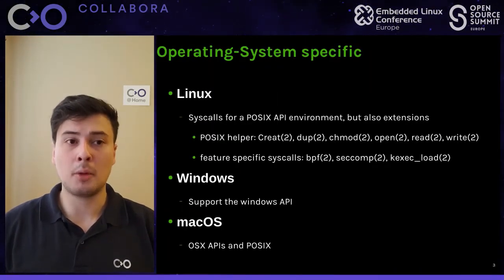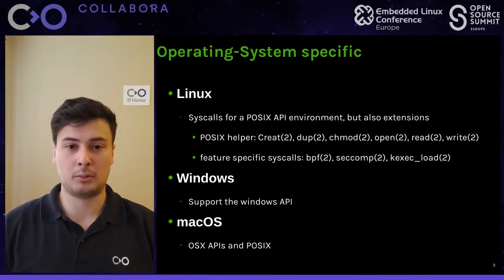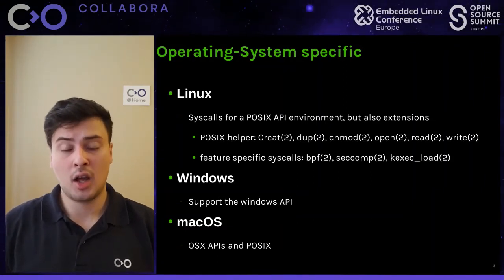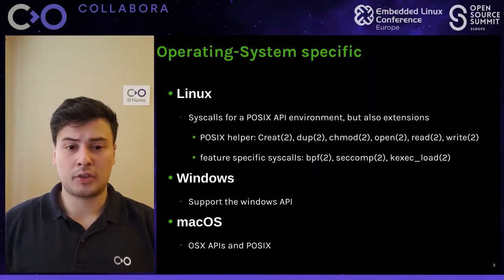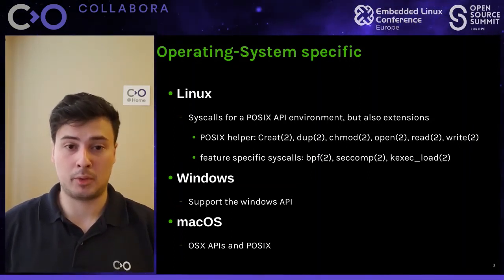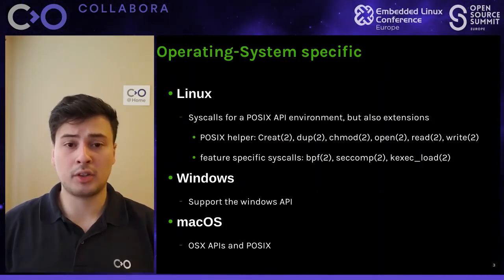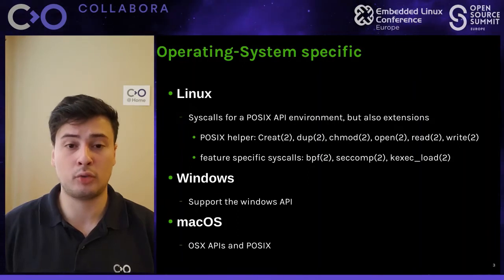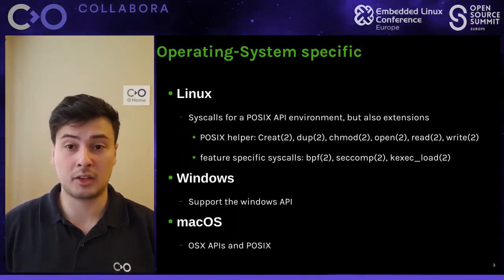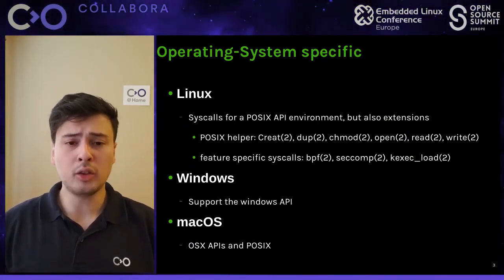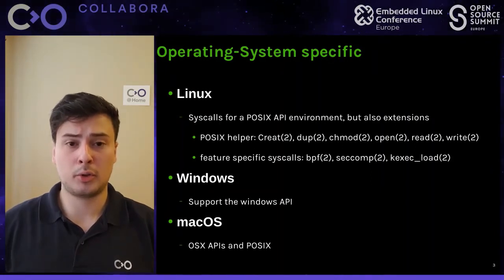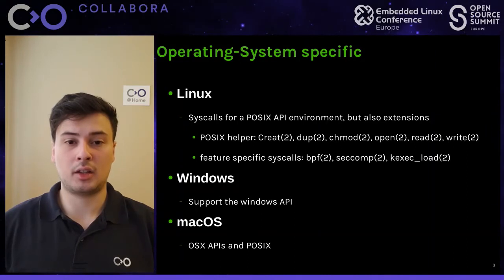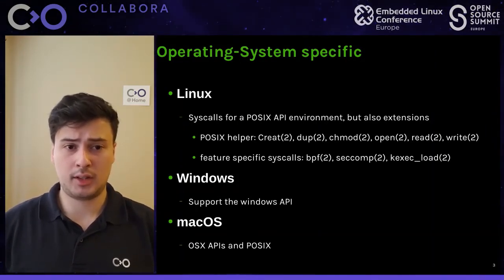Regarding OS specificity, Linux implements system calls useful for a POSIX programming environment — for instance, create, open, read, write. Those are system calls useful for implementing the POSIX API that any Linux programmer is used to. But Linux also exposes system calls for specific Linux features that are not POSIX-specific, like BPF, seccomp, kexec_load, and several others. Windows, exactly like Linux, supports its own programming environment — the WinAPI primarily — so Windows implements a subset of system calls to support that interface.